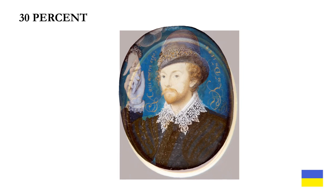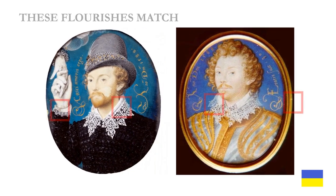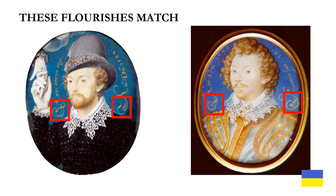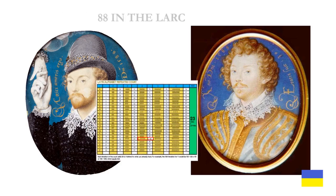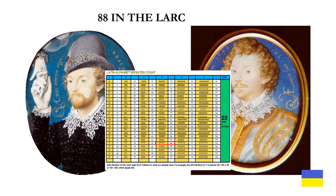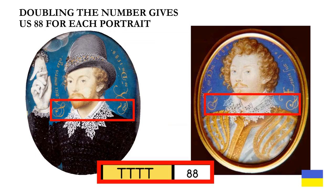the 17th Earl of Oxford. And there are even more clues. We'll go back to 100%. The flourishes in the red boxes all match to a specific degree, and they are really number eights. Now, 88 in the Latin alphabet repeated count is 4T — E — or a homophone of 40. Doubling the number gives us 88 for each portrait.